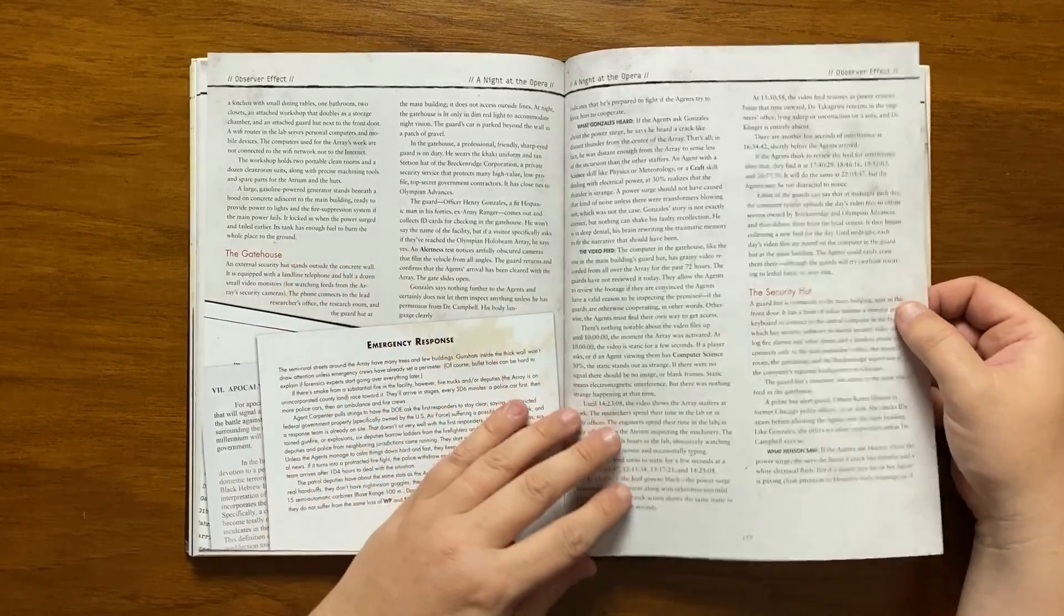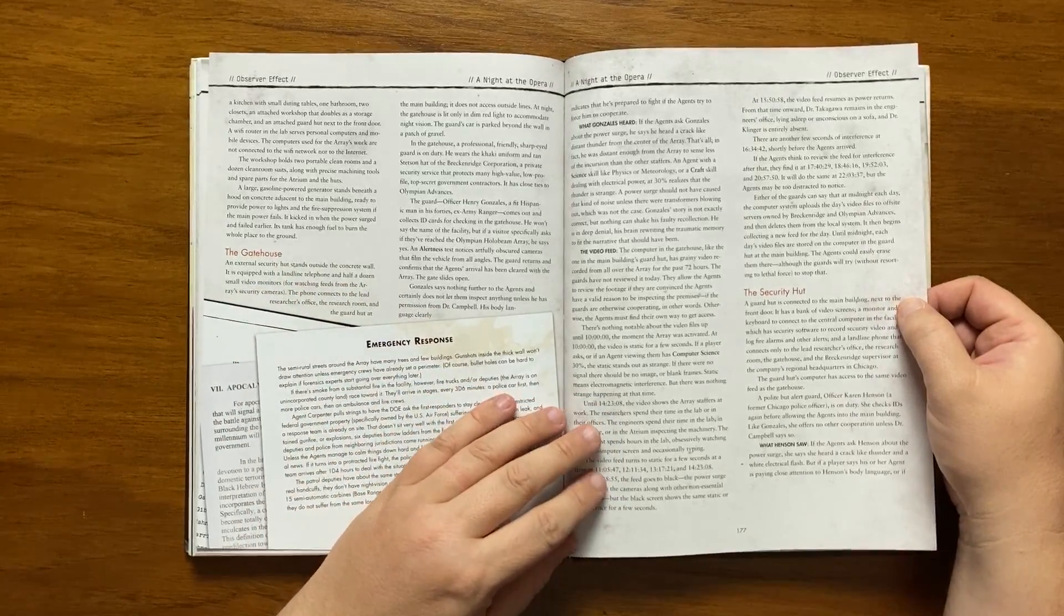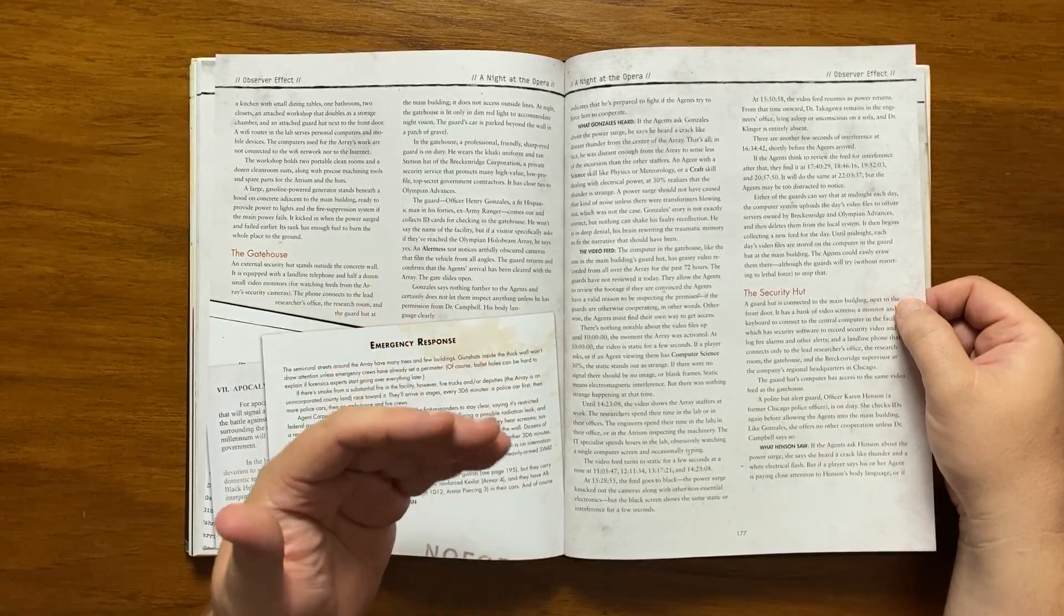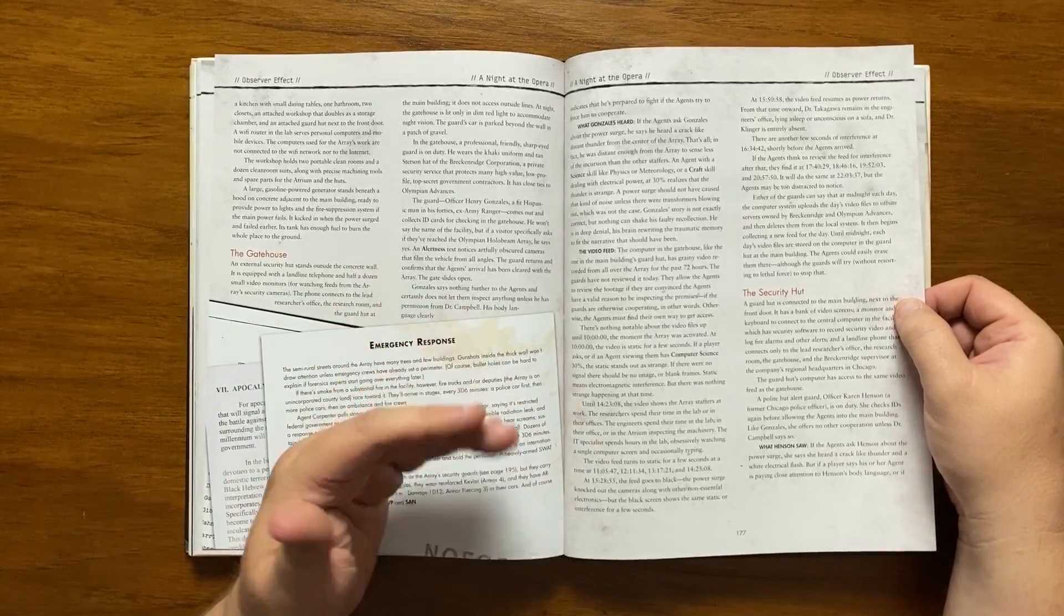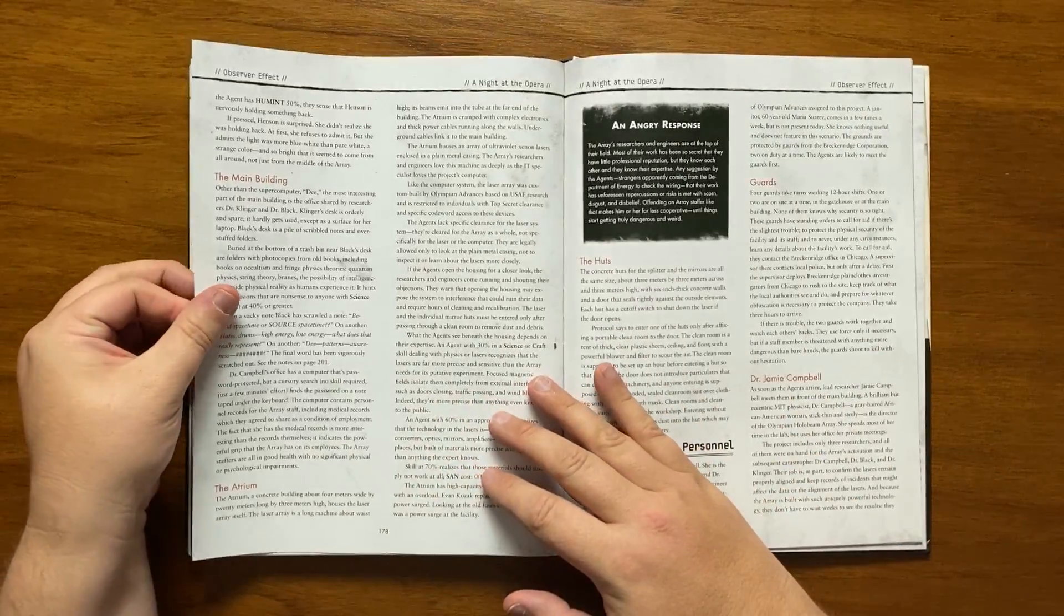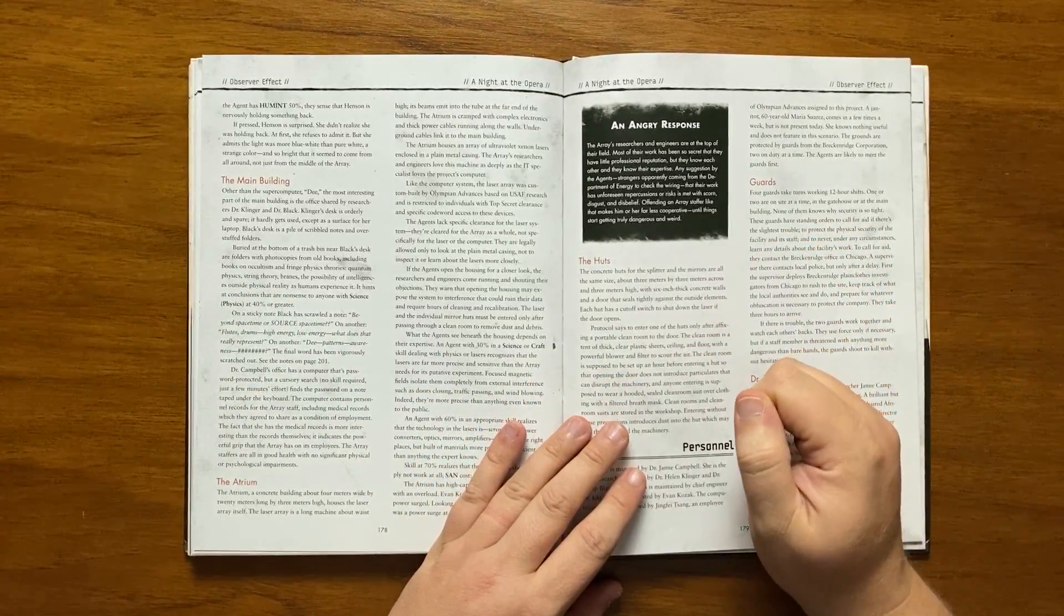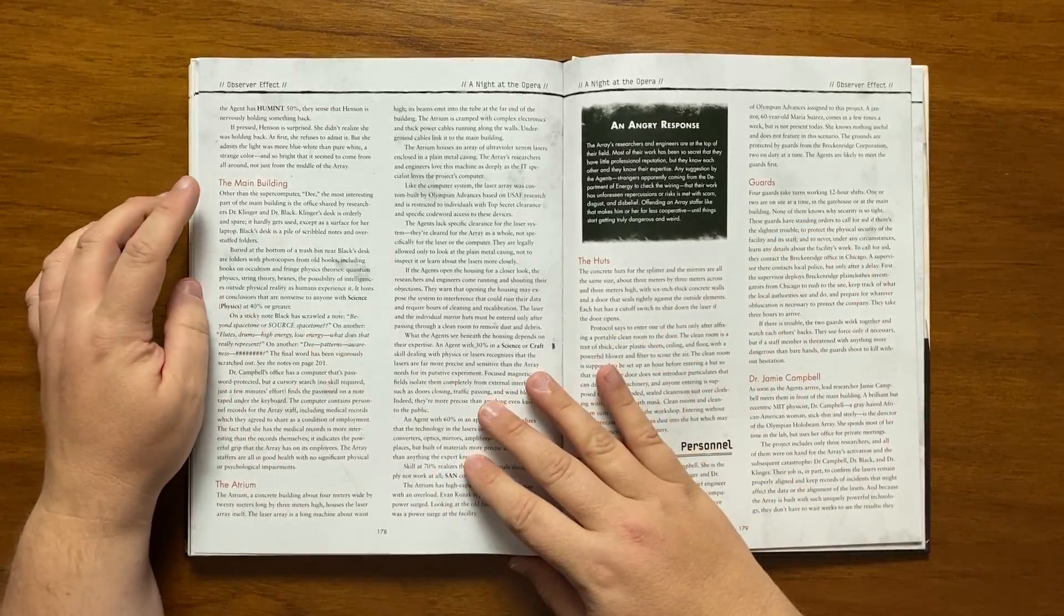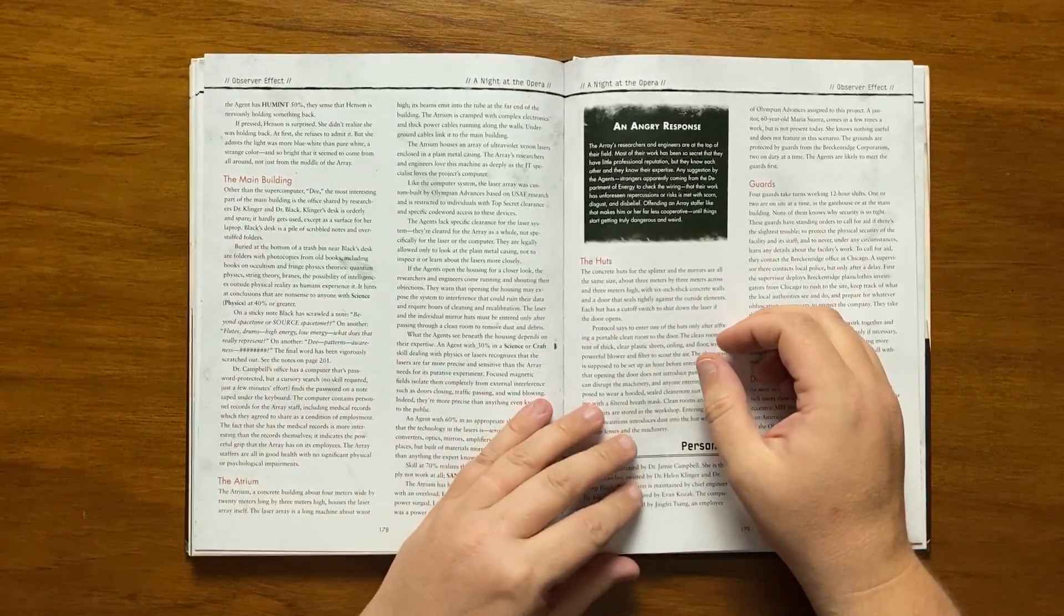There's a security hut attached to the main building which is occupied by Officer Karen Henson a former police officer. She describes the power surge as a crack like distant thunder then a white electrical flash. Her body language to those who pass a human role suggests she is holding back. If pressed she will admit that the light was a strange bluish hue that seemed to come from all around not just the Array itself. The main building is home to the Array's supercomputer, D. It is also where researchers Dr. Klinger and Dr. Black work.